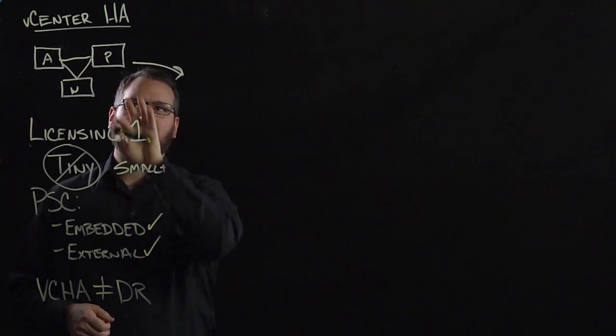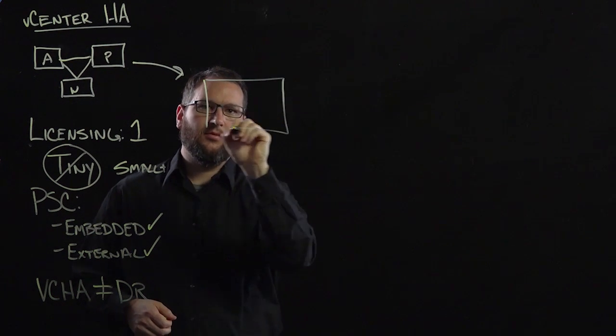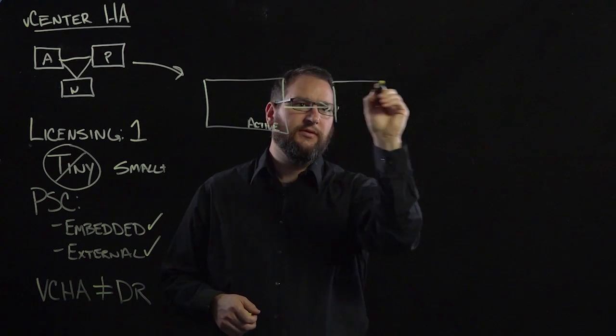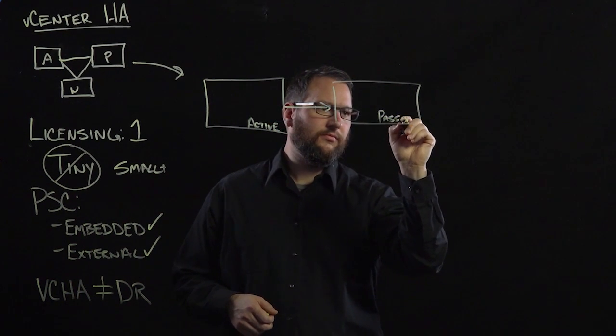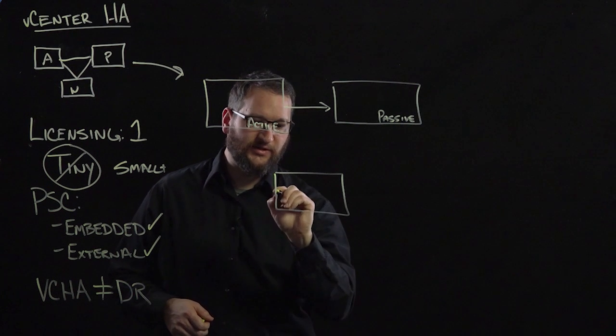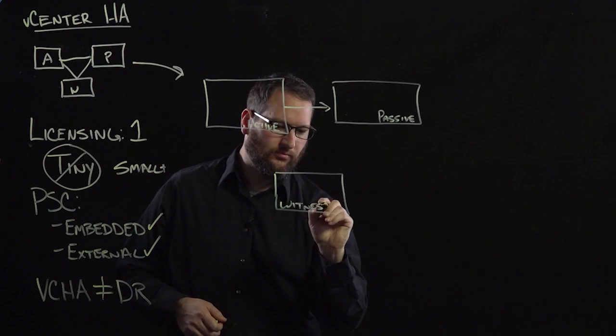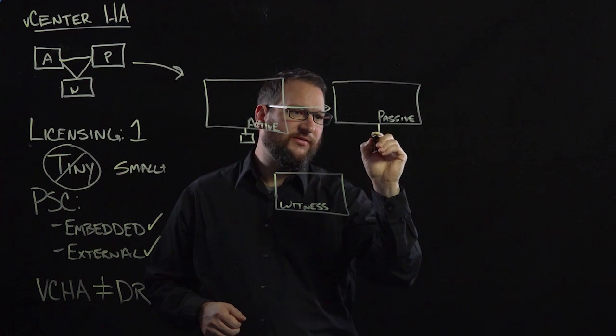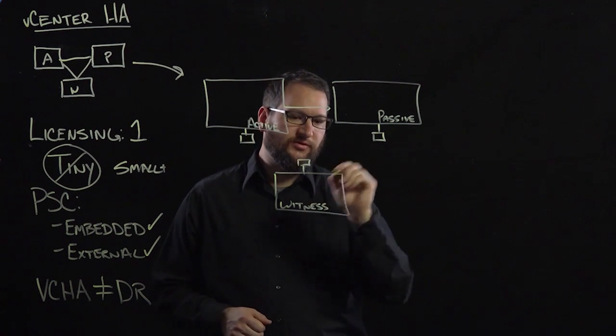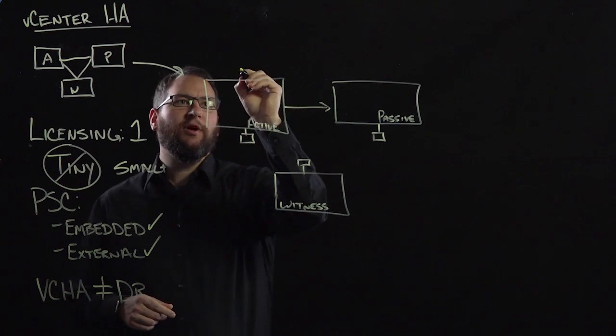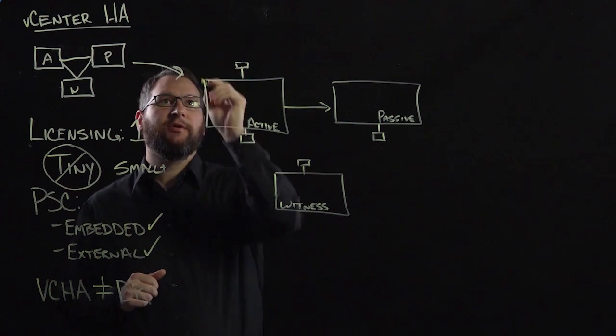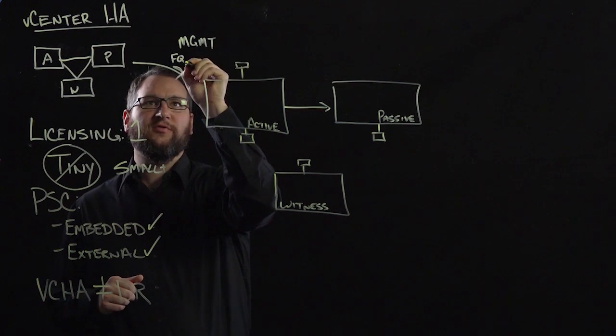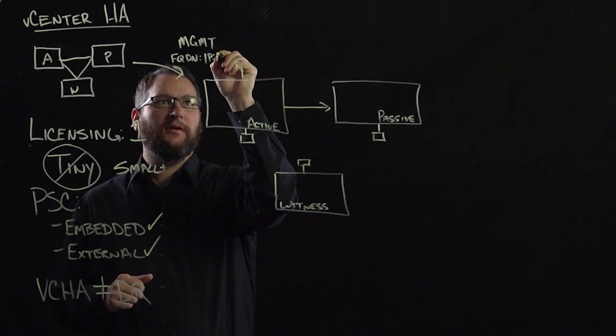So the first thing that we need to do from an architecture perspective is take these clones. We have an active, and we clone that over to a passive node. And we also clone a second time to a witness node. One thing that we do before we actually initiate the clones is we add a second Ethernet adapter. And this is cloned to the witness and passive node. We also have our primary Ethernet adapter, or Ethernet zero, which is the management interface. And it's comprised of an FQDN, an IP, and a MAC address.